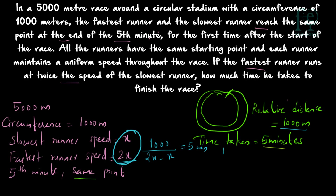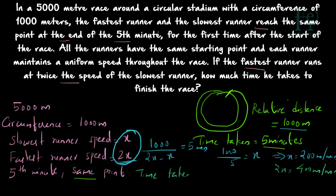So 1000 divided by x equals 5, which gives x equal to 1000 divided by 5, which is 200 meters per minute. That is the speed of the slowest runner. The fastest runner's speed will be 2x, which equals 400 meters per minute. In 1 minute he covers 400 meters. The total race length is 5000 meters. So time taken equals 5000 divided by 400, which gives 12.5 minutes. The fastest runner will complete the race in 12.5 minutes.